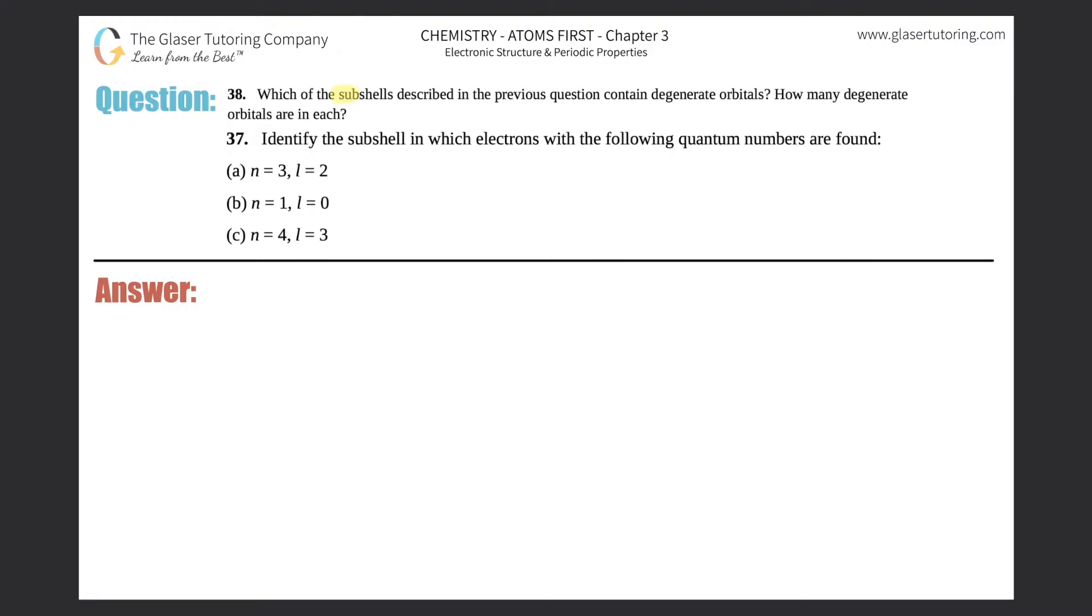Number 38: Which of the subshells described in the previous question contain degenerate orbitals, and how many degenerate orbitals are in each? Alright, so here I just put question number 37 - that's the one they're referring to. We've already done 37, so if you guys want the answers to 37, just click the back button if you're on the playlist.